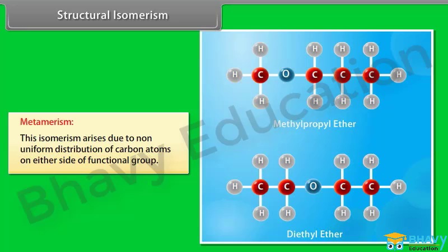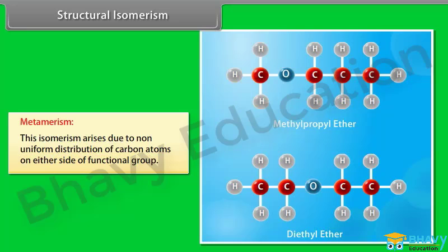Metamerism arises due to the non-uniform distribution of carbon atoms on either side of the functional group. For example, methylpropyl ether and diethyl ether.